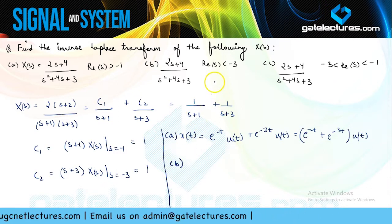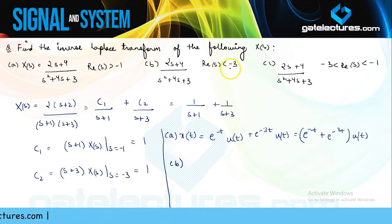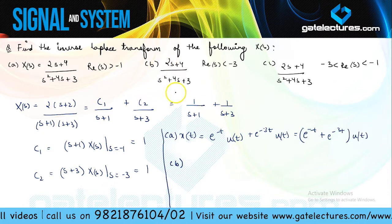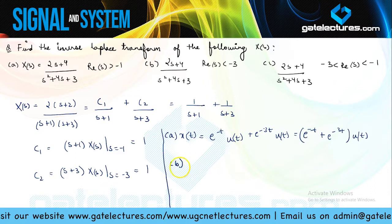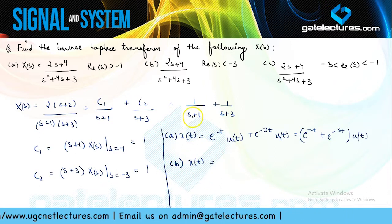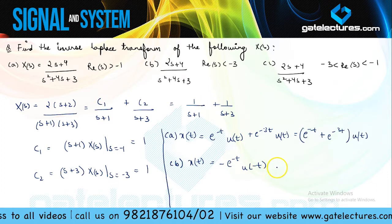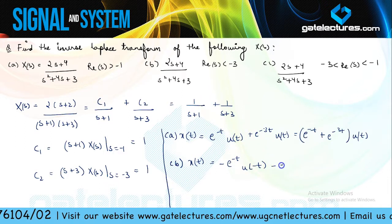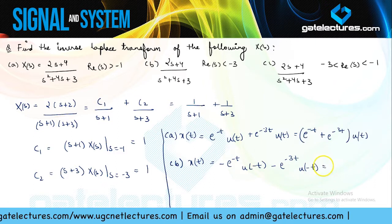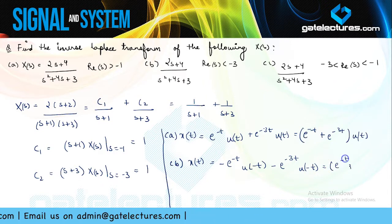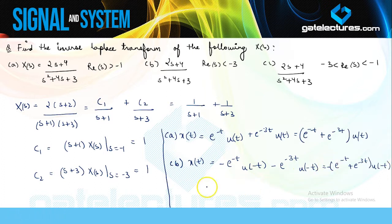For the second part, if the ROC is real part of S less than minus 3 — that is, left of the leftmost pole — this means the signal is going to be a left-handed signal. The inverse Laplace of 1/(S + 1) is minus e^(−t)u(−t) and of 1/(S + 3) is e^(−3t)u(−t). We select u(t) or u(−t) based on the ROC only; that is why specifying ROC with the Laplace transform is very important.